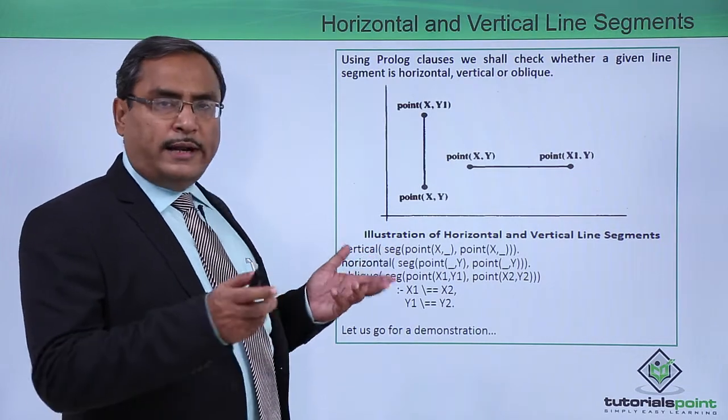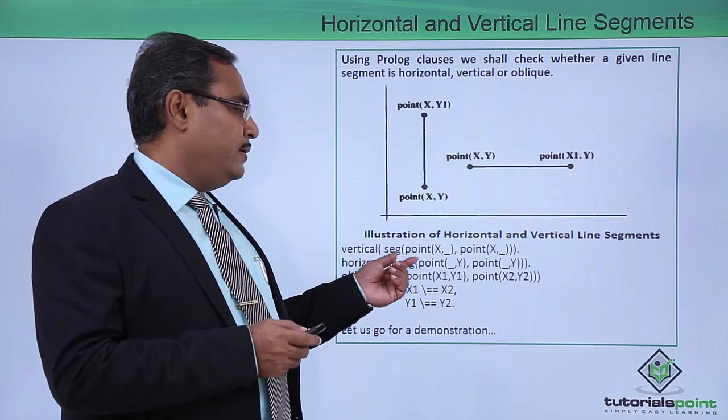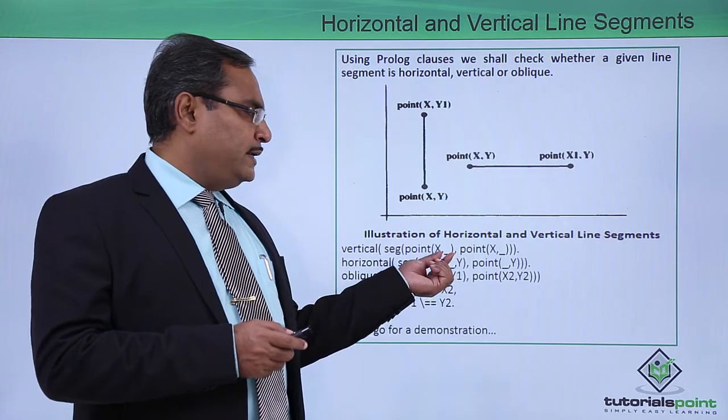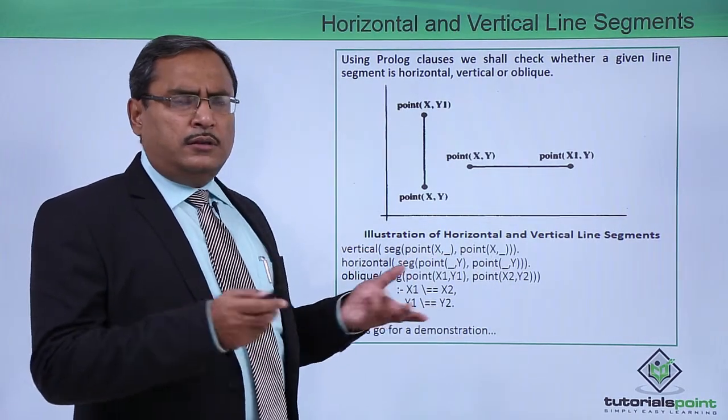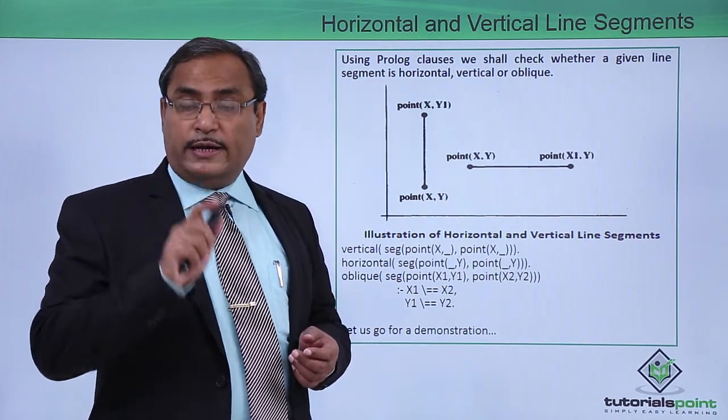Vertical, how to write the respective predicates? I can give you the suggestions. Vertical we can go for seg point x, point x. We know that in case of vertical, if you want to check whether the line segment is vertical or not, the y value is immaterial. I should check whether the two x coordinates are same or not.